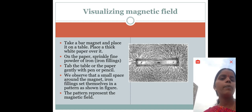Then what we observe on the paper is that in a small space around the magnet, iron fillings set themselves in a pattern as shown in figure. The pattern represents the magnetic field.